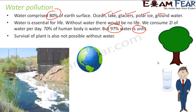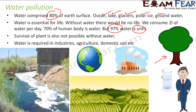Survival of plants is also dependent on water — without water, plants will not survive either. So both humans and plants cannot survive without water. Water is very critical. But nowadays, water pollution is happening at a large scale; most rivers around the world are polluted because of large-scale industrialization. Water is also required in industries, for agricultural purposes, and for domestic use.